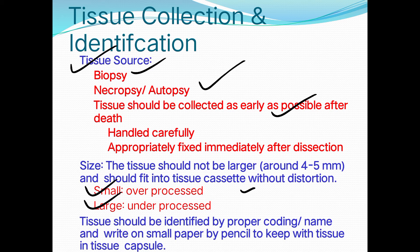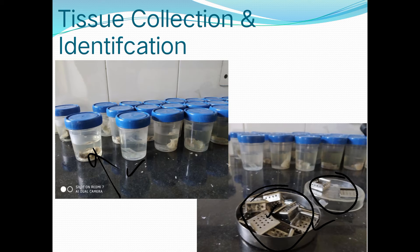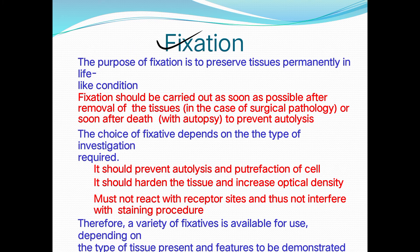The paper label must be written in pencil so it remains intact when the cassette is placed in various chemicals. The tissue cassette is closed with a cover, the coding is written and kept with it. The tissue cassette with the paper label inside is placed in the processing chemicals throughout the procedure.